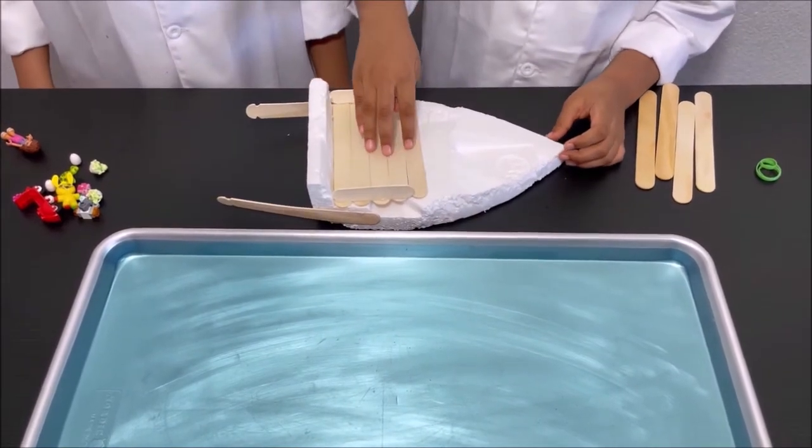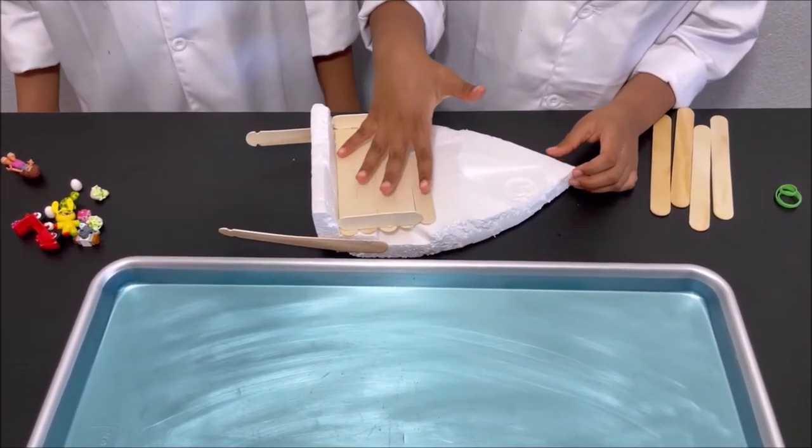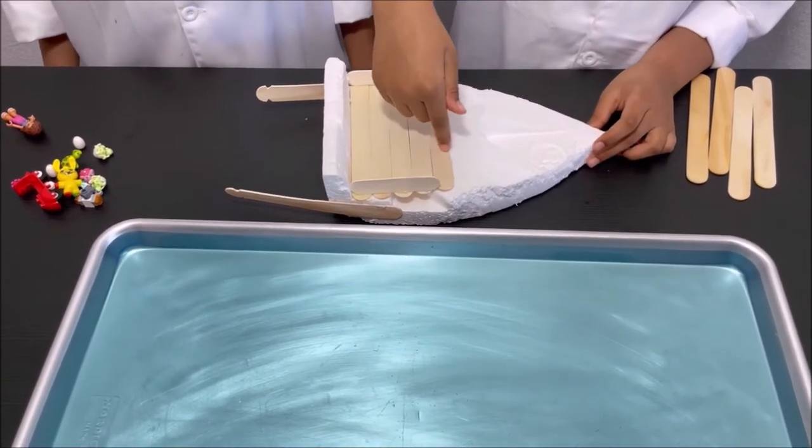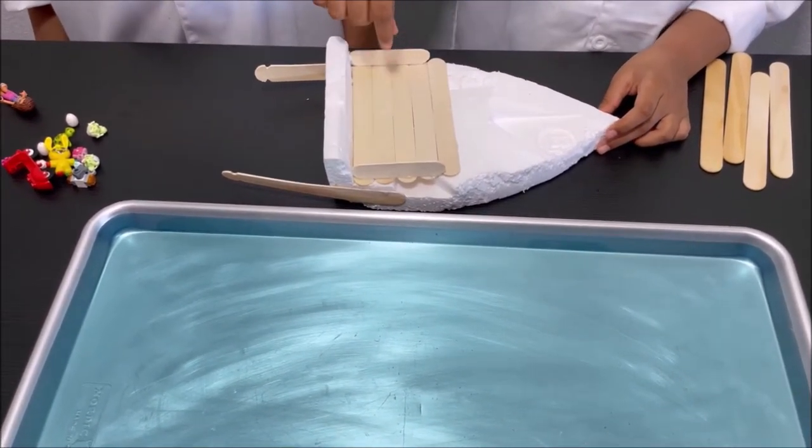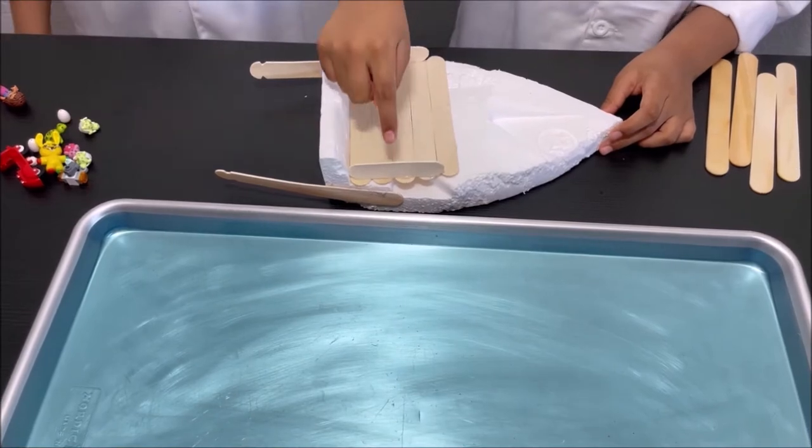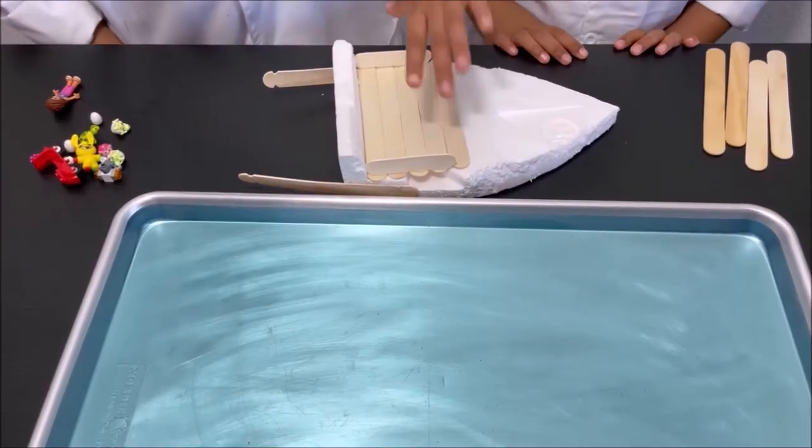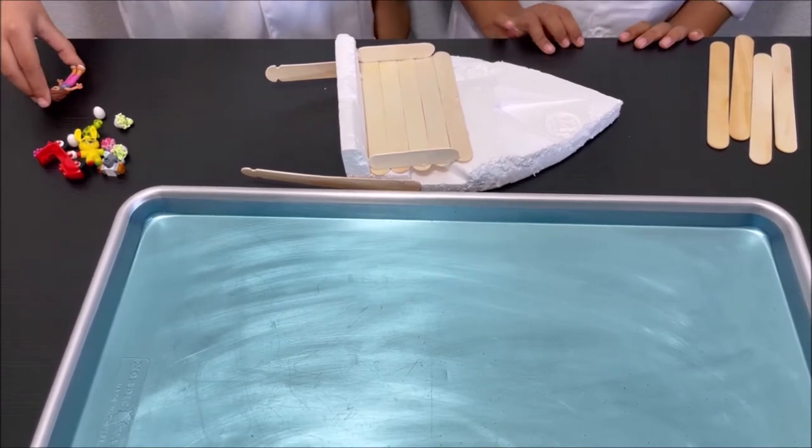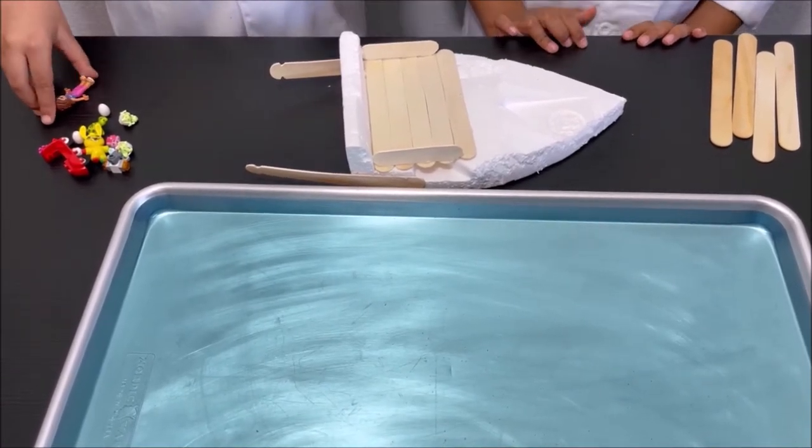Then I put five popsicle sticks on the boat and stuck them with hot glue, and I put two shorter pieces on the sides. We put these two small popsicle sticks so the toys won't fall off the boat.